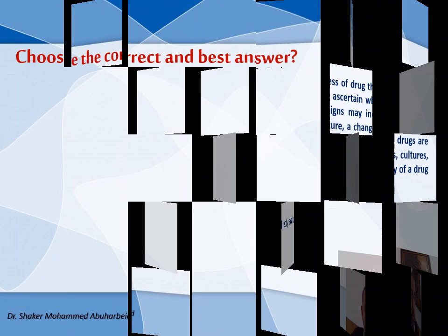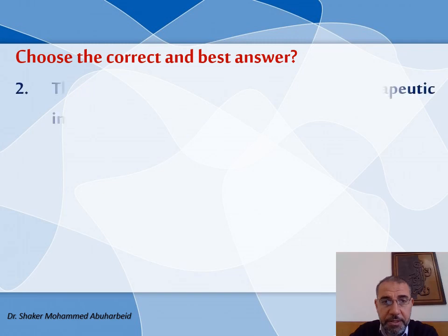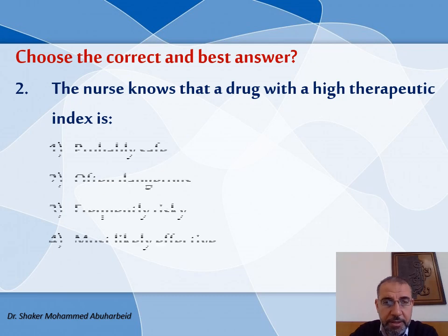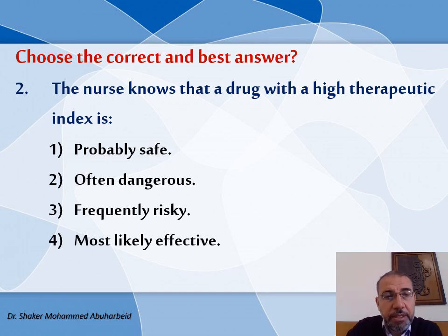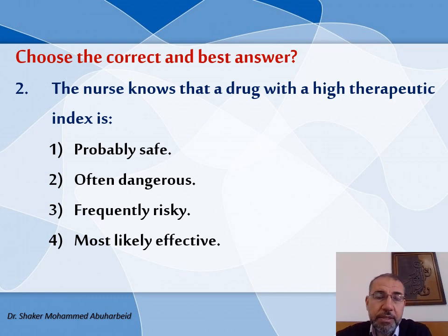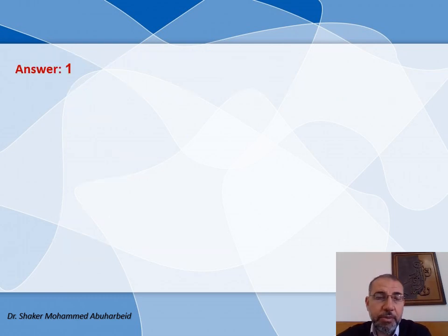Second question: The nurse knows that a drug with a high therapeutic index is — first option, probably safe; second option, often dangerous; third option, frequently risky; or fourth option, most likely effective. The best answer is number one.